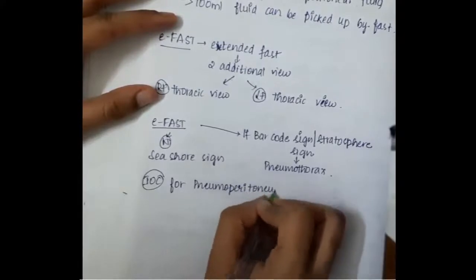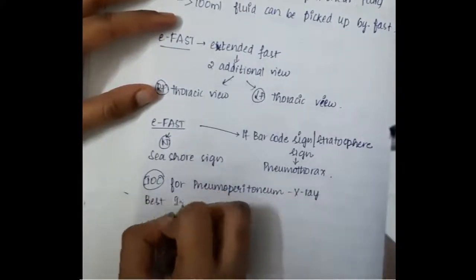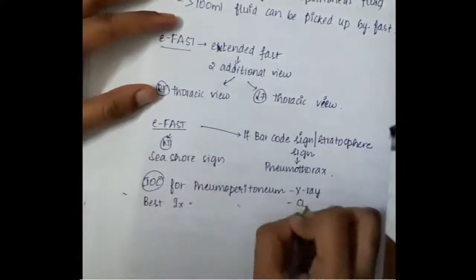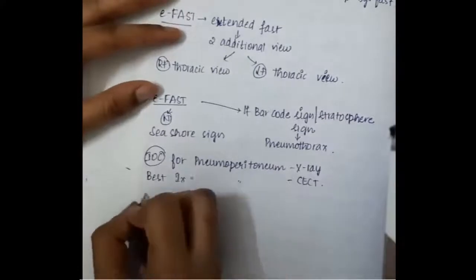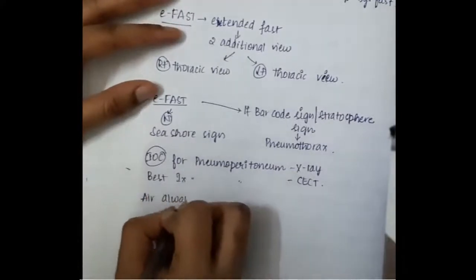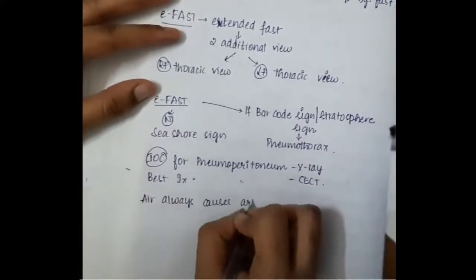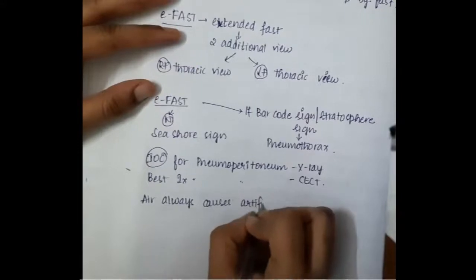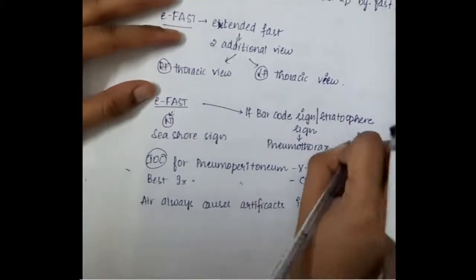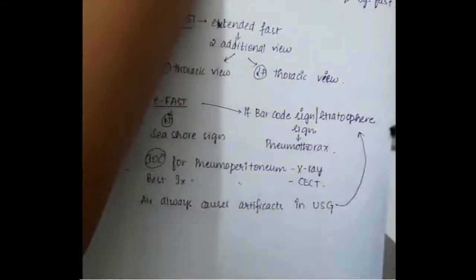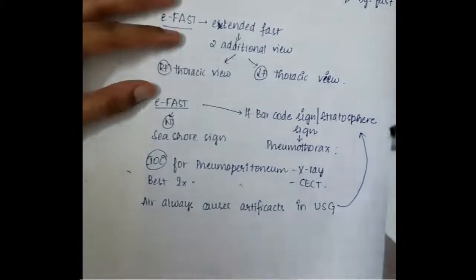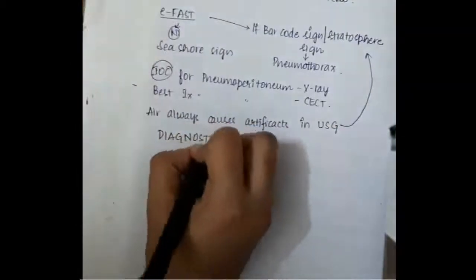Investigation of choice for pneumopericardium is X-ray. Best investigation for pneumoperitoneum is CECT, though investigation of choice for pneumoperitoneum is X-ray. Air always causes artifacts in USG, and those artifacts are seen as the stratosphere sign.